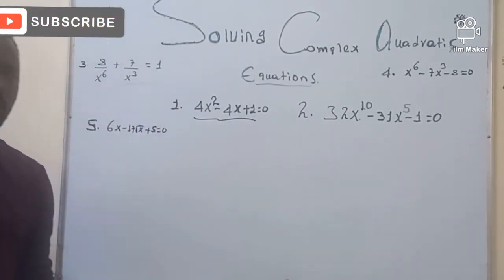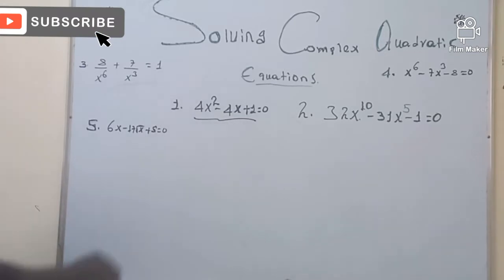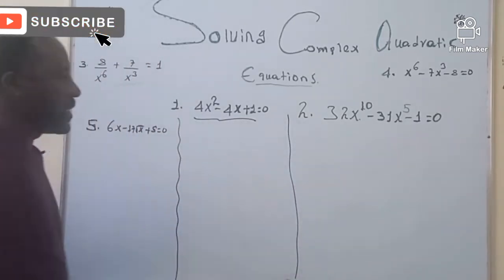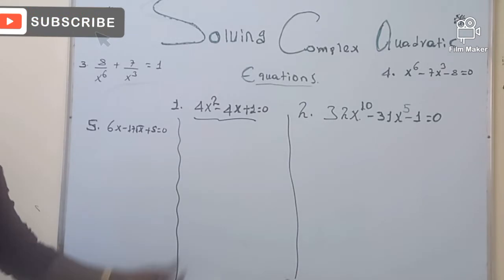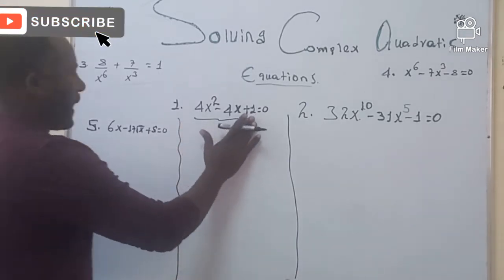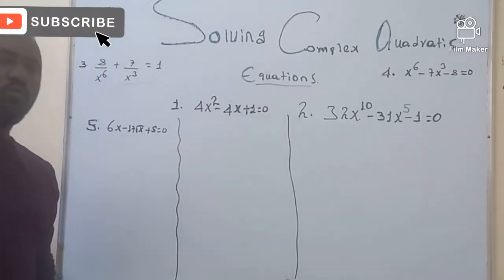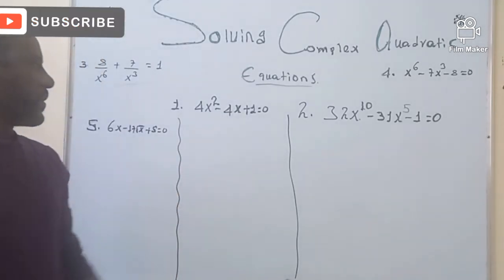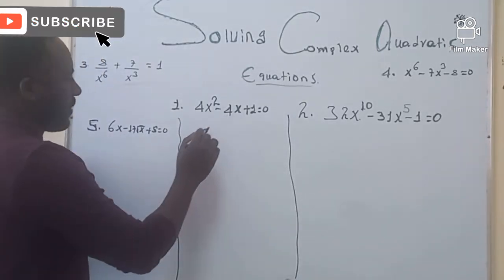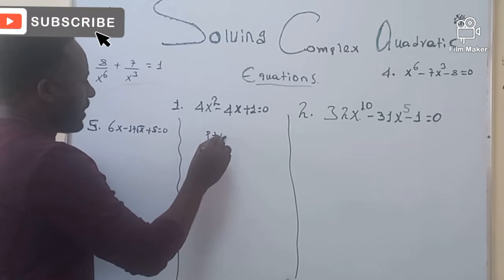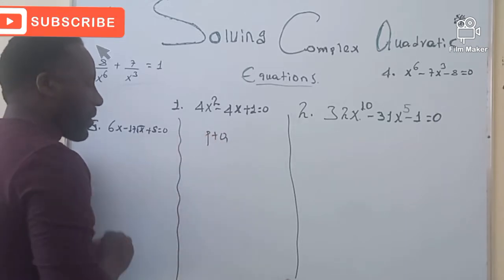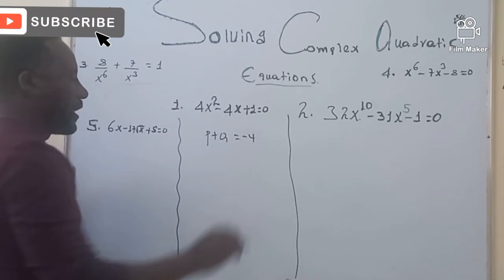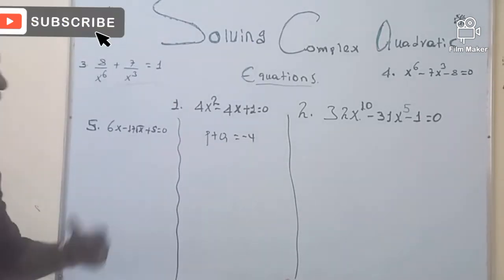On the first problem, in order to solve this question, we need to find two numbers P and Q whose sum is exactly the coefficient of the middle term — that is negative 4 — and whose product is AC, which equals 4.